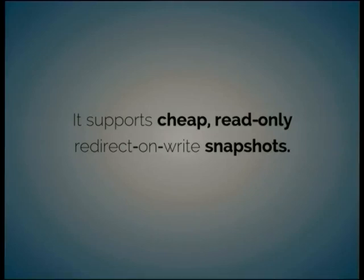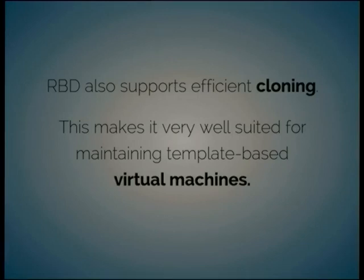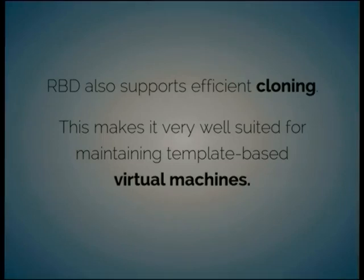Because RBDs are thin-provisioned and don't need to be thought of as one contiguous chunk in the object store, we can very cheaply do redirect-on-write snapshots. These snapshots are read-only, but we can do cloning — taking a snapshot, defining it as a master copy for other RBD images, and those images are then writable. Does that ring a bell for anyone familiar with Glance? It makes this an excellent fit for template-based virtual machines: take a running VM, snapshot it, toss it in Glance, and clone from it on nova boot.